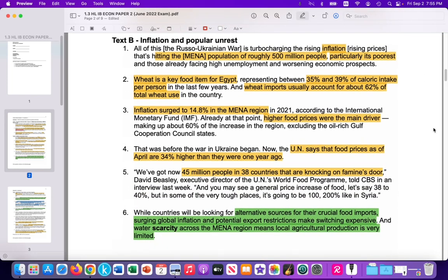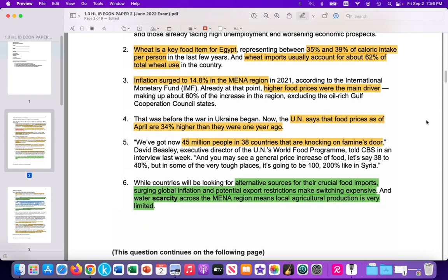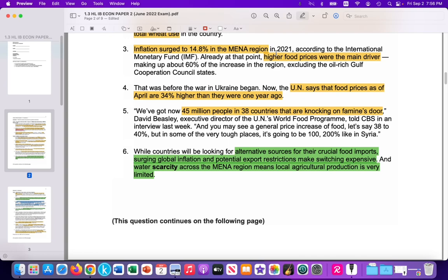Text B, with the reduction in the supply of wheat to MENA countries, Middle East, North African countries, that reduction in supply would lead to rising prices and rising food prices and inflation. So here we have information about inflation. Rising prices, this is a type of cost-push inflation that you would study in macroeconomics. And this cost-push inflation in food prices impacting 500 million people in the region. Wheat is a key food item for Egypt.